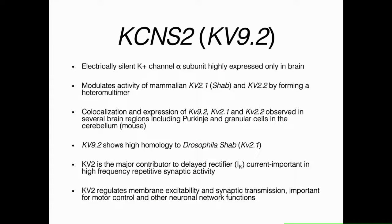KCNS2 is an electrically silent potassium channel alpha subunit that is selectively and highly expressed in the brain. It modulates the activity of mammalian KV2.1, equivalent to Drosophila SHAB, and mammalian KV2.2 by forming heteromultimers. Co-localization and expression of KV9.2 together with other KV2 channels has been observed in several brain regions, including Purkinje and granular cells in the cerebellum. KV9.2 shows high homology to Drosophila SHAB with 42% amino acid identity and 63% amino acid similarity. The KV2 channels are the major contributor of the delayed rectifier current and play a role in regulating membrane excitability, synaptic transmission, and motor control.